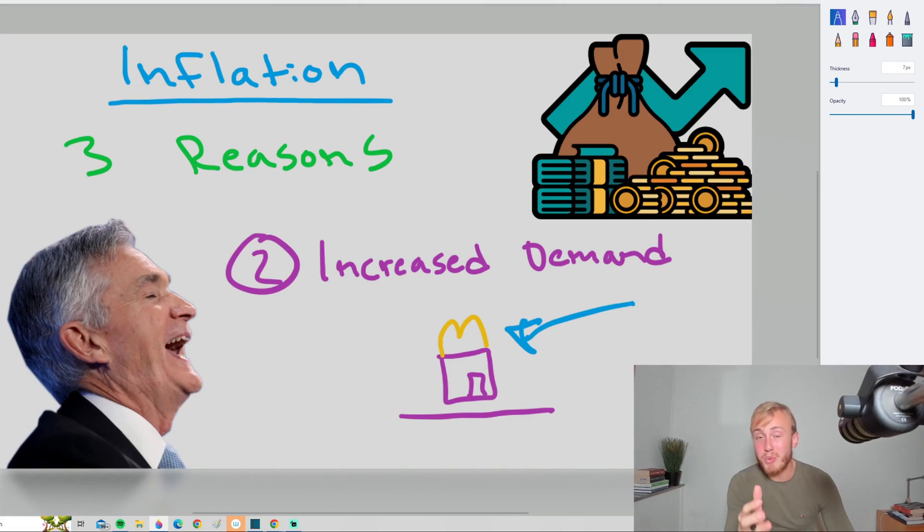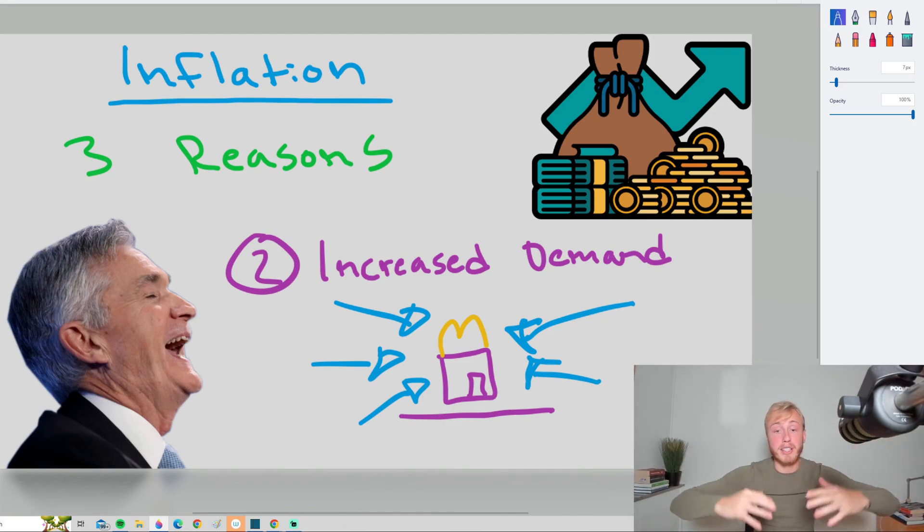So what would happen here to this McDonald's? Well, everyone in the city would rush to this place for lunch, dinner, breakfast. We would have so much demand here. And if McDonald's is smart, they will realize that they can actually increase the prices of the hamburgers and people will still buy them because the only thing they like is hamburgers. The demand for hamburgers is exploding.